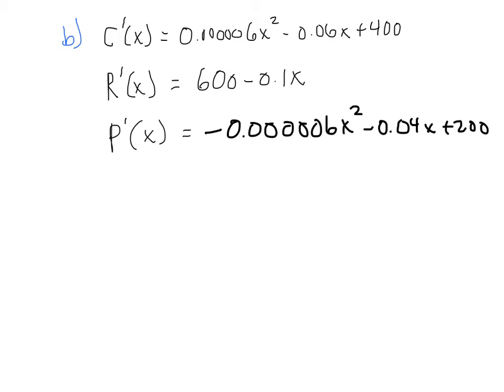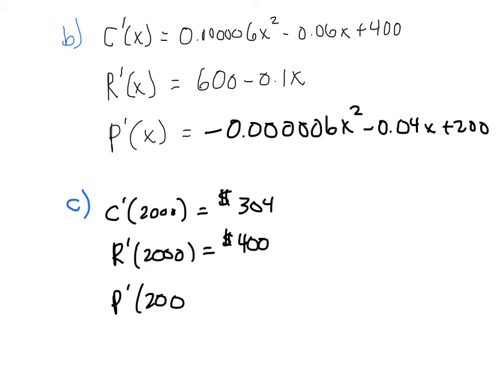In letter C, we're asked to compute the marginal cost, marginal revenue, and marginal profit with x equal to 2,000. So you just plug 2,000 into each of these equations. You can use your calculator to crank this out. Here are the values that I came up with. C prime of 2,000 is $304. Revenue, marginal revenue at 2,000 is $400. And marginal profit is $96. So after producing 2,000 television sets,